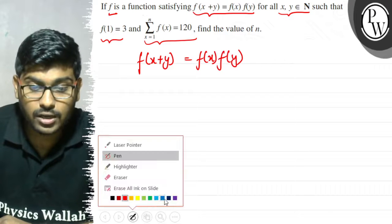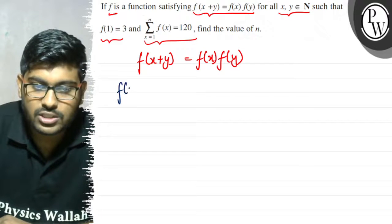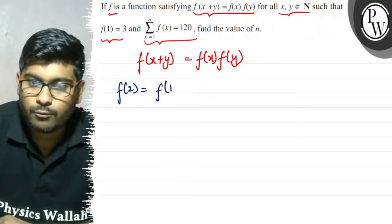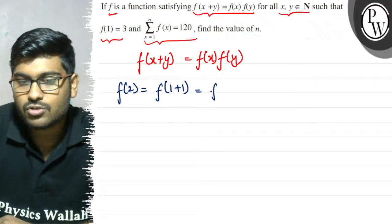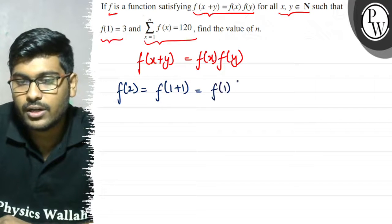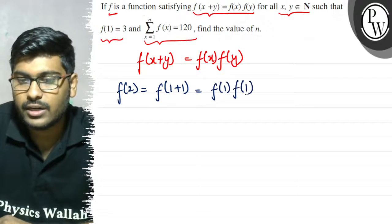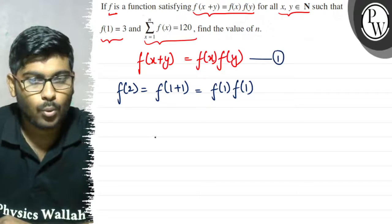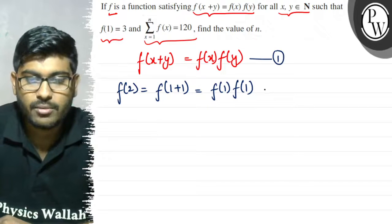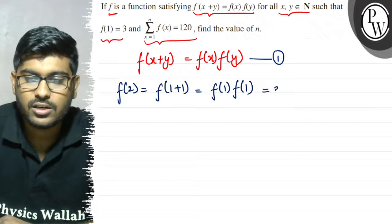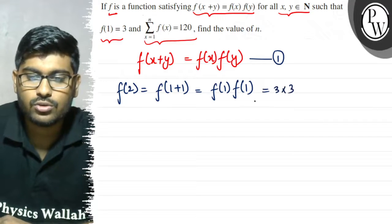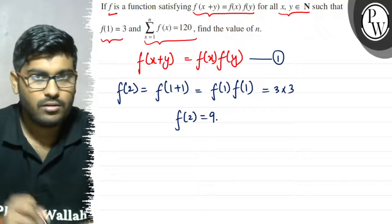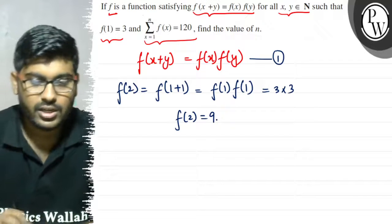If we want to write f(2), we can write f(1+1), and using this relation we can write f(1)·f(1). This will become 3·3, so f(2) is equal to 9.